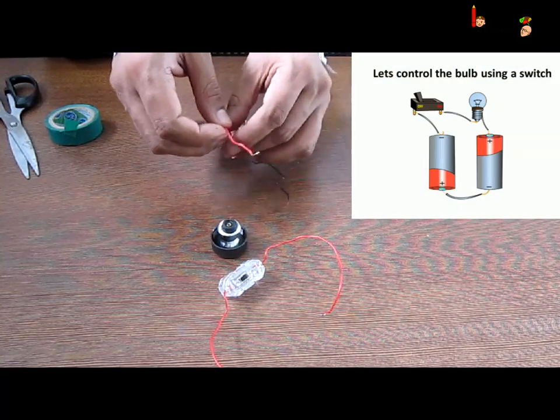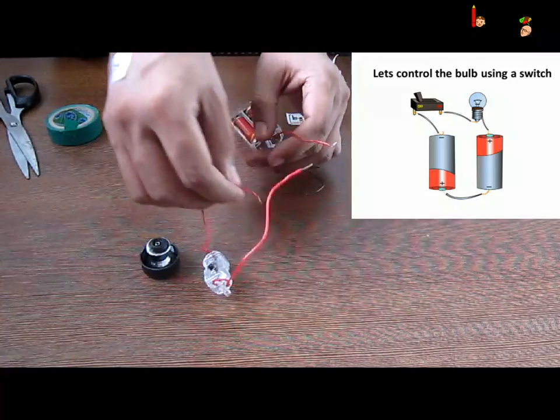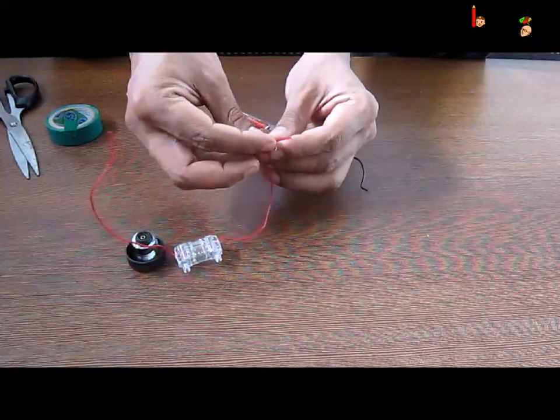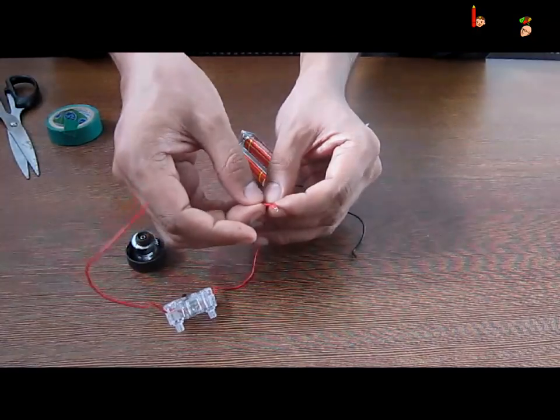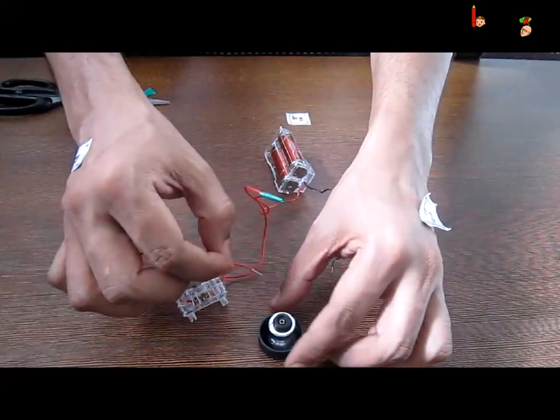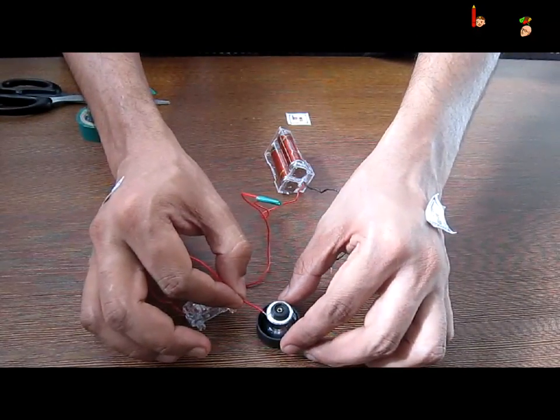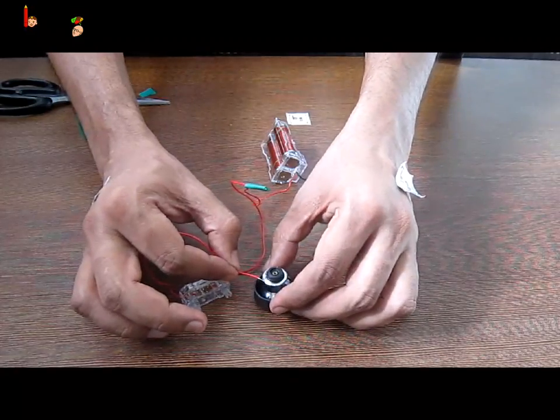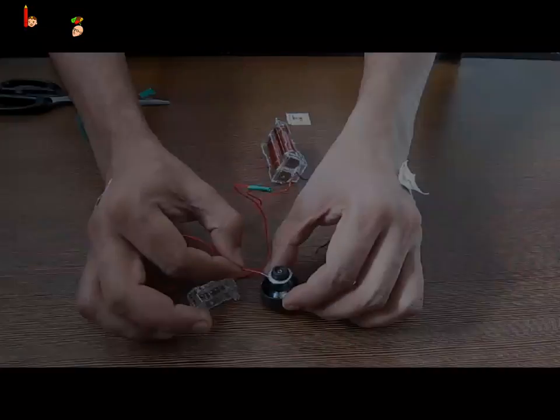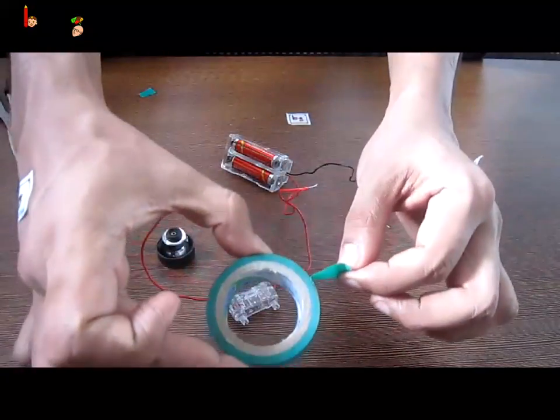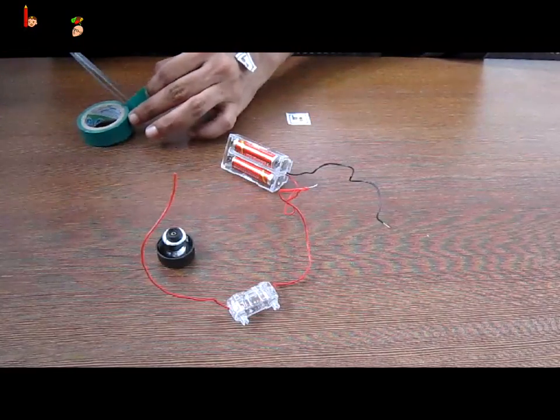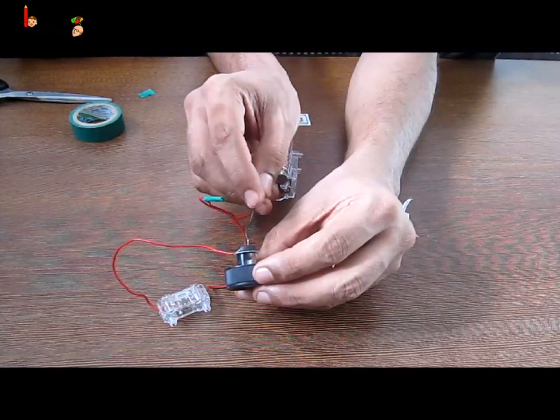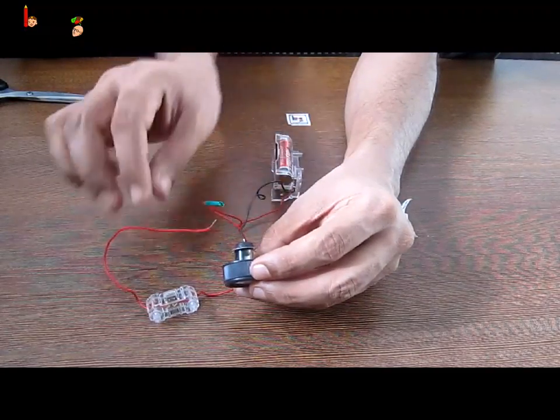Now I will add a switch to the circuit. Now let us connect the wire coming out of the cell to one end of the switch and the other end of the switch is connected to the bulb. I use electric tape as a safety precaution and the other end of the bulb is connected to the wire coming from the cell.